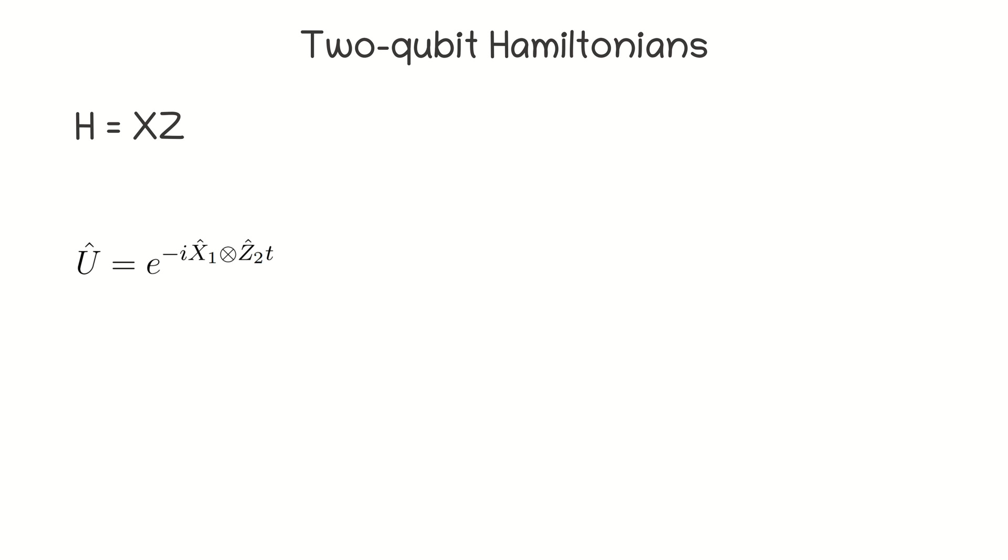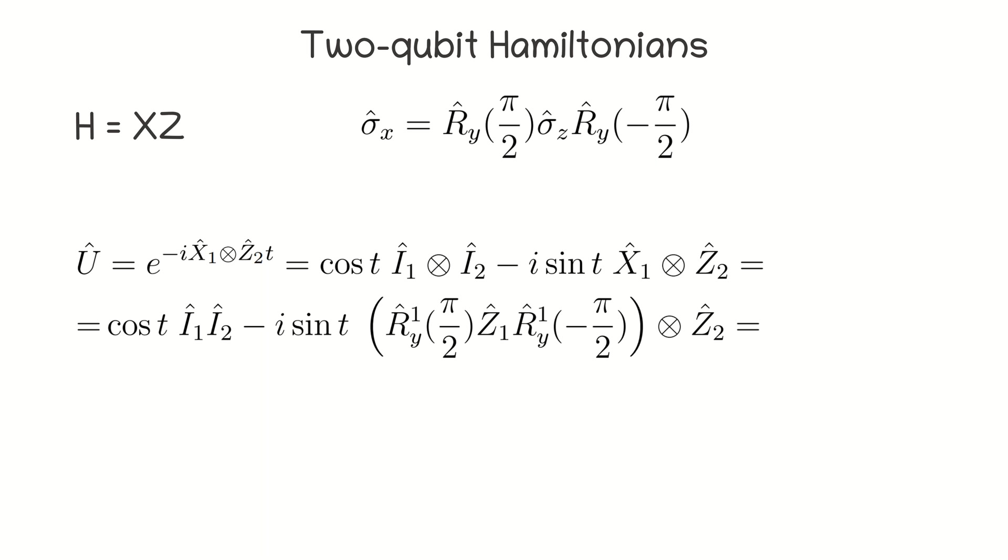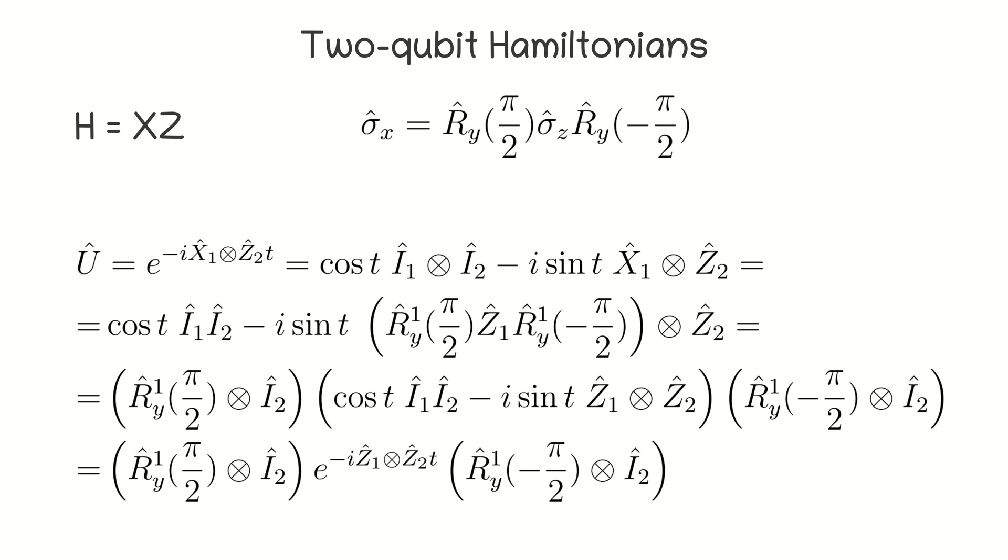Let's calculate the evolution operator for the Hamiltonian XZ and try to construct a quantum circuit for it. The tensor product of X and Z is a self-inverse matrix. Therefore, we can decompose this matrix exponential. Then, we can use the identity for X gate and get the following line. Since the Ry operator is unitary, we can take it out of the bracket. The superscript 1 of Ry gate denotes a qubit number. Thus, we got the Rzz operator in a shell of rotation operators.